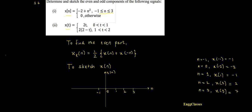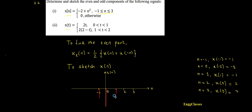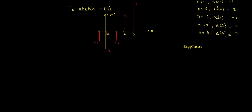The next task is to sketch all these values. At position minus 1 the signal is minus 1; at position 0 it is minus 2; at position 1 it is minus 1 again; at position 2 it is 2; and at position 3 it is 7. This is how x(n) looks. The next task is to sketch its mirror image x(-n).